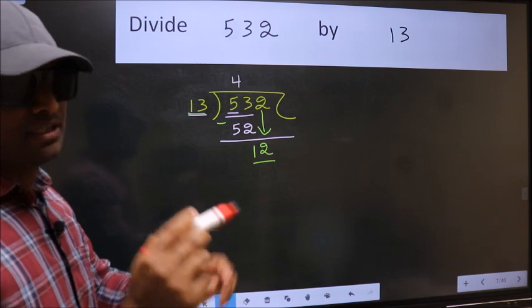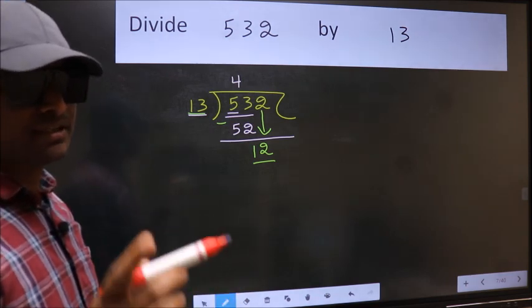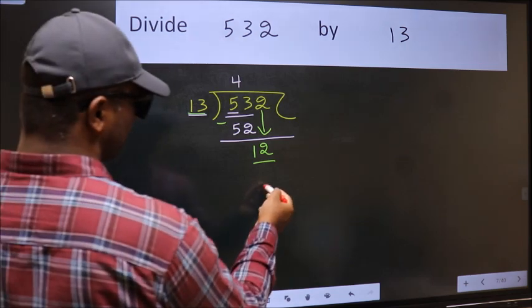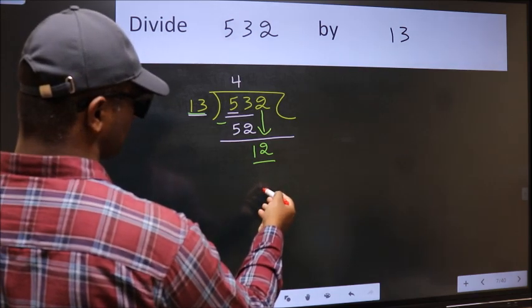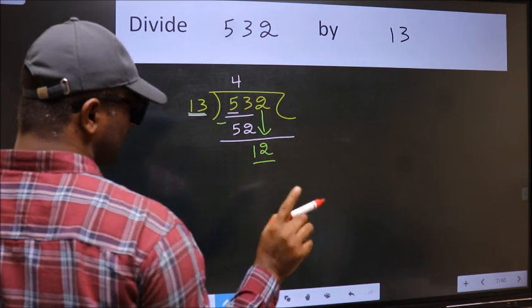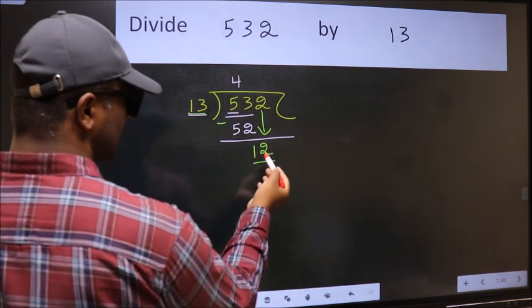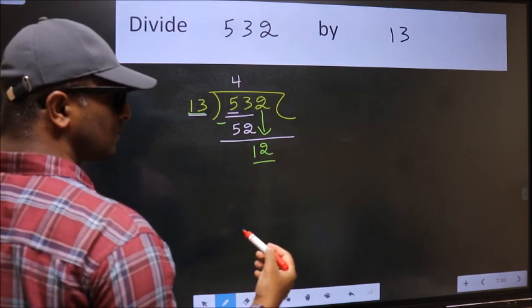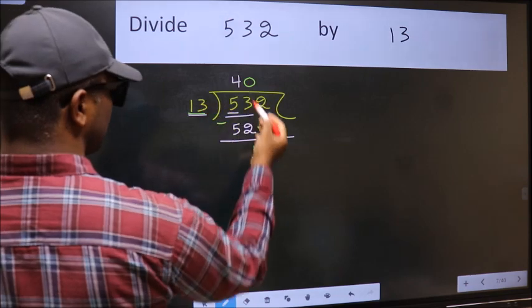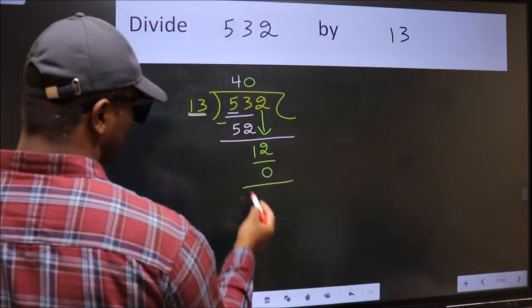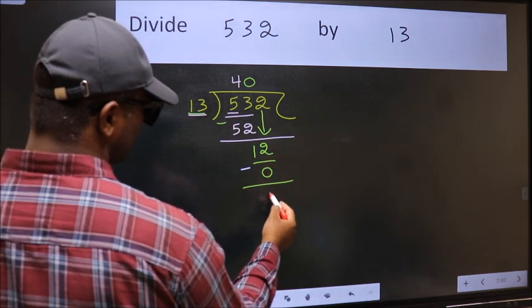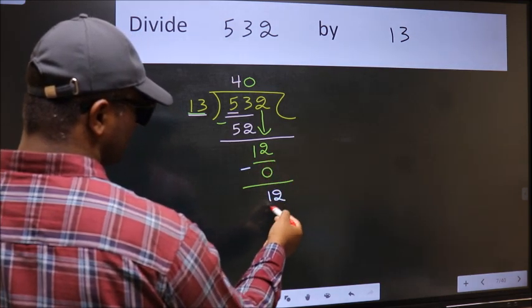Instead, what you should think of doing is: which number should we take here? If I take one, we will get 13, but 13 is larger than 12. So we should take zero. 13 into 0 is 0. Now we should subtract: 12 minus 0 is 12. Over here we did not bring any number down.